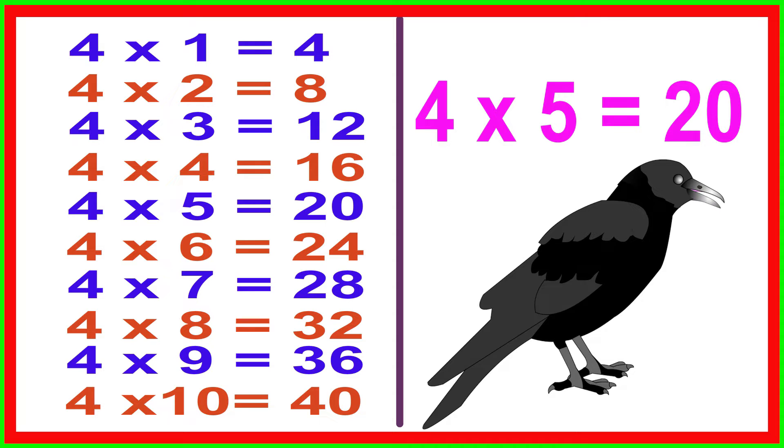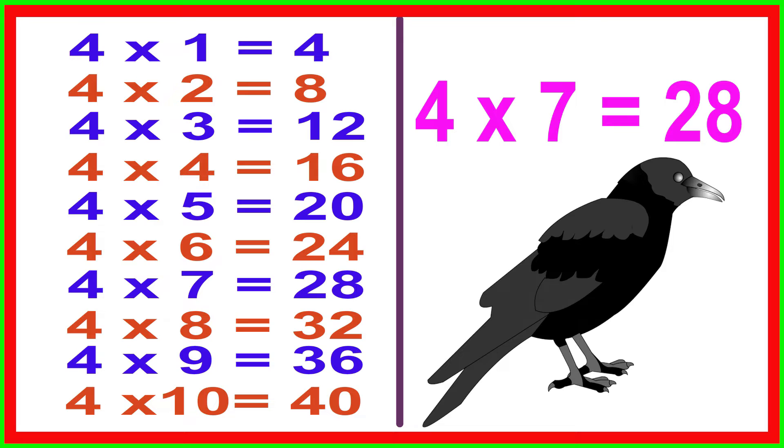4 times 5 equals 20, 4 times 6 equals 24, 4 times 7 equals 28, 4 times 8 equals 32, 4 times 9 equals 36, 4 times 10 equals 40.